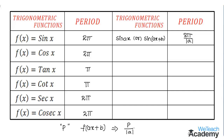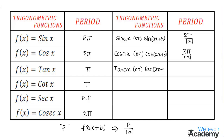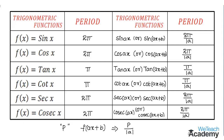Similarly, if f(x) = cos(ax) or cos(ax + b) is a periodic function, then the period is also equal to 2π divided by |a|. The period of f(x) = tan(ax) or tan(ax + b) is equal to π divided by |a|. Similarly, we get the periods of all these trigonometric functions. Now let us discuss a few examples on this concept.